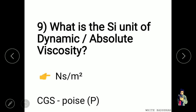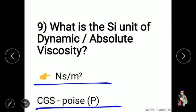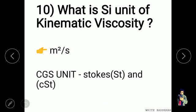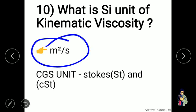The SI unit of dynamic or absolute viscosity is Newton-second per meter square, and the CGS unit is poise. The SI unit for kinematic viscosity is meter square per second, and the CGS unit is stokes and centistokes.